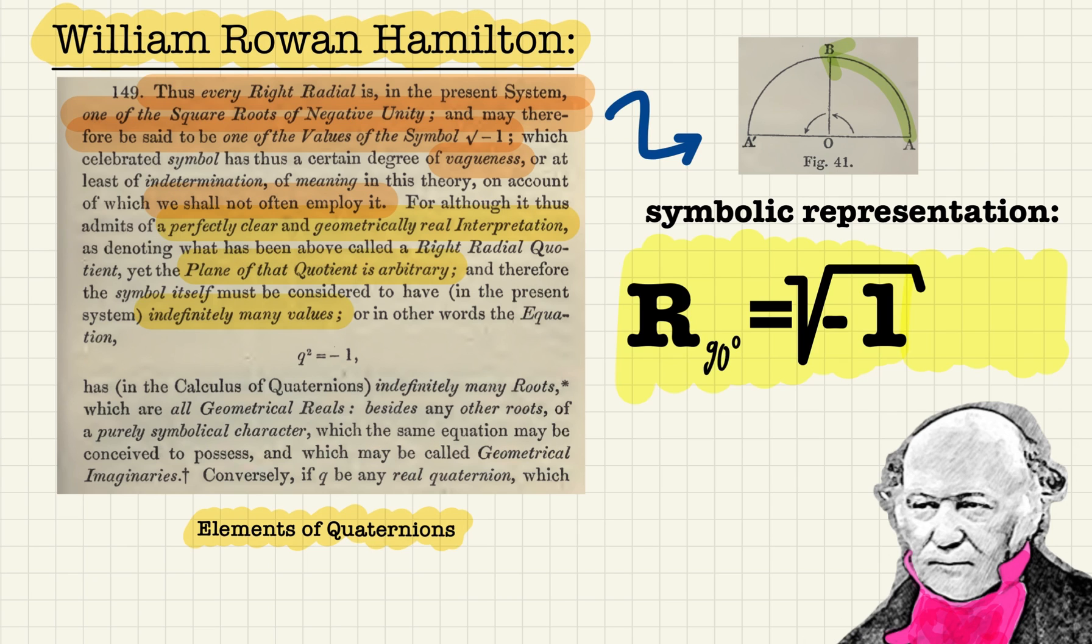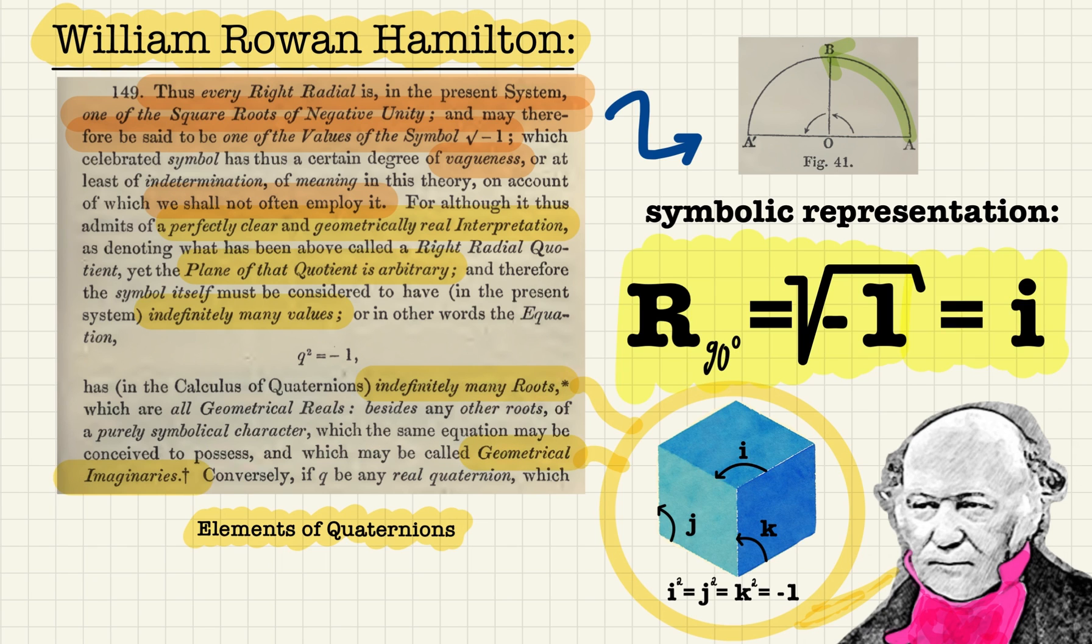Like we have seen for the number 3, the symbolic representation has changed in the course of history. Let's add another symbol for a 90 degree rotation. Maybe i will fit. Since in our 3 dimensional space we have infinitely many planes we can rotate in, there are infinitely many square roots of minus 1. This led Hamilton to the invention of his famous quaternions. But that's a whole other story.